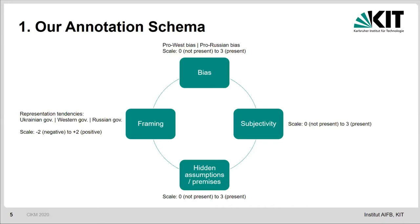Our annotation schema looks like this. First of all, we have an overall bias, and we define bias here with respect to some target. For example, if we have news articles about the Ukraine crisis, we have a bias with respect to the Western government and the Russian government — so we have pro-West and pro-Russian bias. We use a scale from 0 to 3, meaning that 0 indicates no bias and 3 indicates a strong bias.